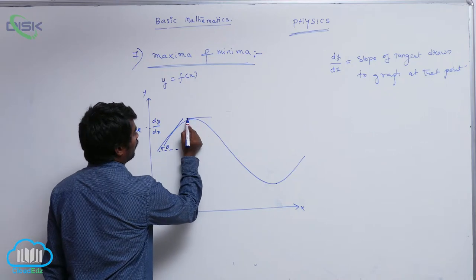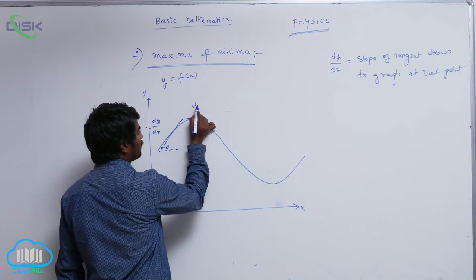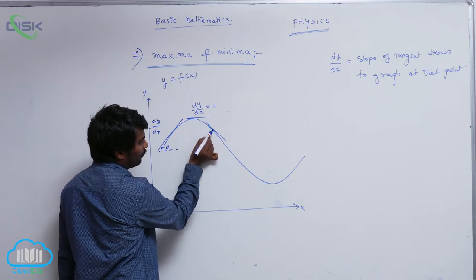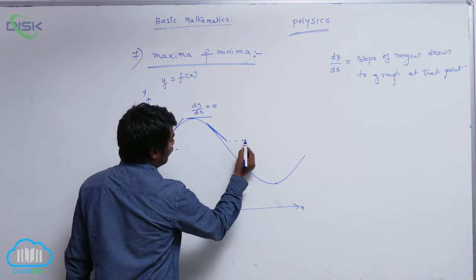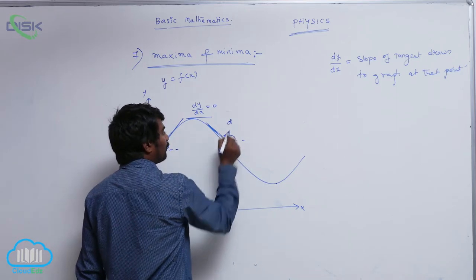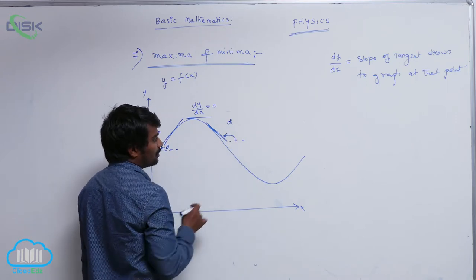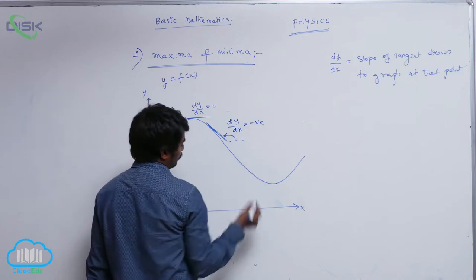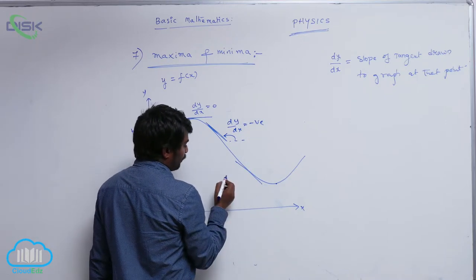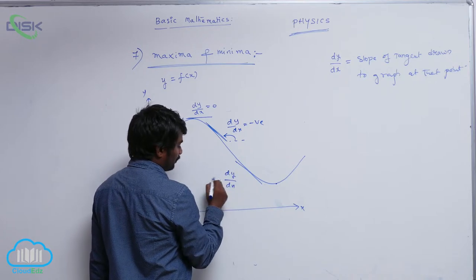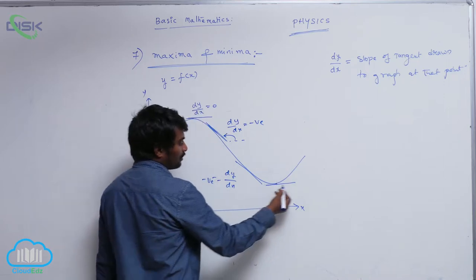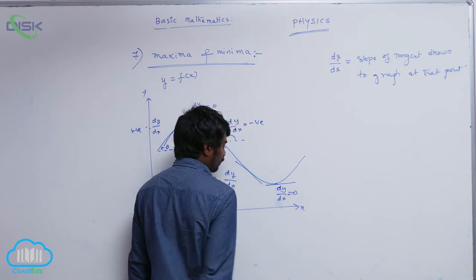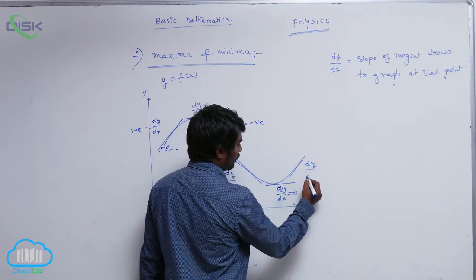Here, the angle made by this tangent with the x-axis is 0, so dy by dx is 0 because tan theta is 0. And here, if you draw a tangent to the graph and it makes an angle greater than 90 degrees with the x-axis, the slope will be negative because theta is greater than 90 degrees — tan theta value is negative, so dy by dx is negative. Similarly here, the slope is also negative, so dy by dx is negative. But here again it makes a 0 angle with the x-axis, so tan 0 is 0, meaning dy by dx is 0. And beyond that point, dy by dx is positive.